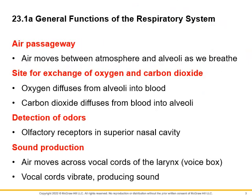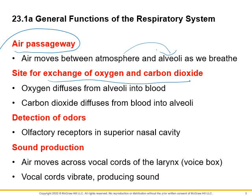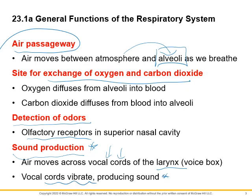General functions of the respiratory system: it is a passageway for air, exchanging air between the atmosphere and the alveoli sacs. It's the site of gas exchange at the alveoli. Detection of odors — the olfactory cranial nerve number one, with olfactory receptors in the superior portion of the nasal cavity. And we also have sound production, happening in the larynx. Vocal cords and vocal folds vibrate, and that's what produces sound.